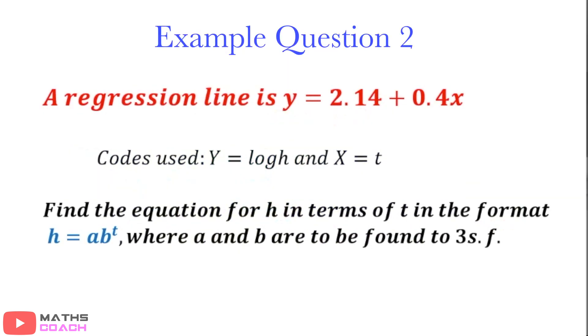So, we now have a regression line of y equals 2.14 plus 0.4x. Let's just focus on that. We have a gradient of positive 0.4, and we have an intercept of 2.14. We are given codes, y equals log of h, and x equals t. The question now is, find the equation for h in terms of t, and this time the format is given as h equals a, b to the power of t. And here, a and b are the unknowns.